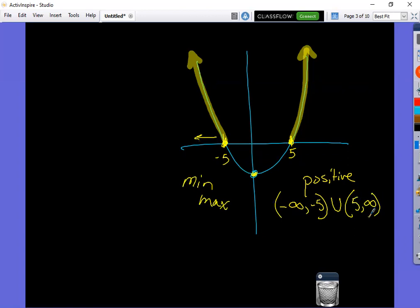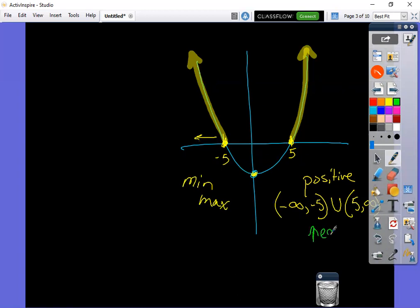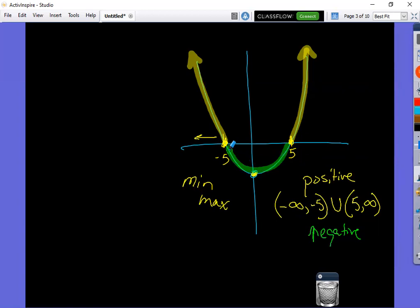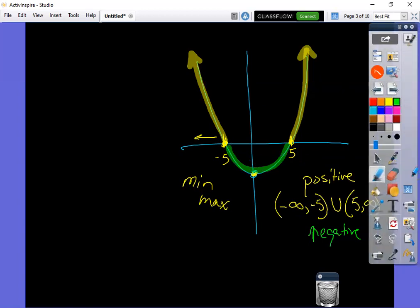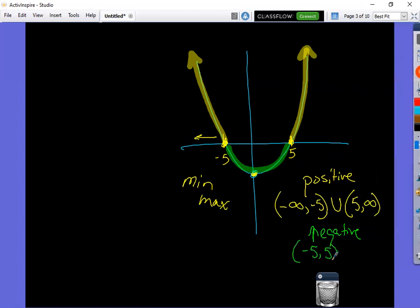The negative, where is this graph negative? That would be this dip on the bottom part. So if you came over here and this little smile on the bottom, so again at the zeros itself, the five and the negative five, they would not be included here either because zero is neither positive or negative. So the graph would be negative in those two spots.